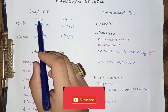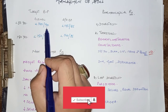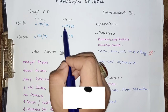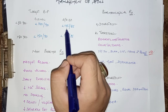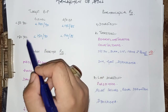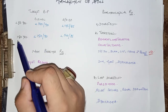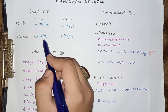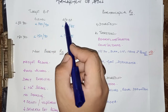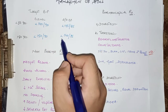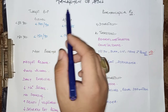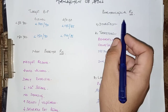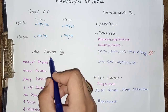The target blood pressure for patients aged less than 80 years: clinic measurement should be less than 140/90 mmHg, and ambulatory or home BP measurement should be less than 135/85. If the age is more than 80 years, the clinical BP should be less than 150/90, and ambulatory or home BP measurement should be less than 140/85.